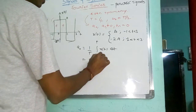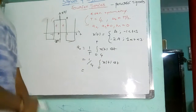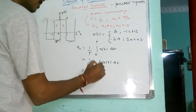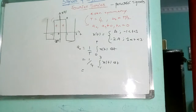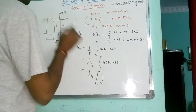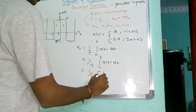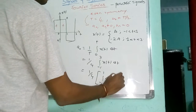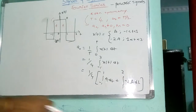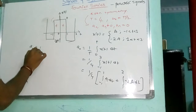That is 1 by 4, integral 0 to 4, X of T DT. But here, the time period — I consider it from minus 1 to 3. I will split this into two parts: minus 1 to 1, its value is A DT; whereas 1 to 3, its value is minus 2A DT. Now here, DT is given by 1 by 4.